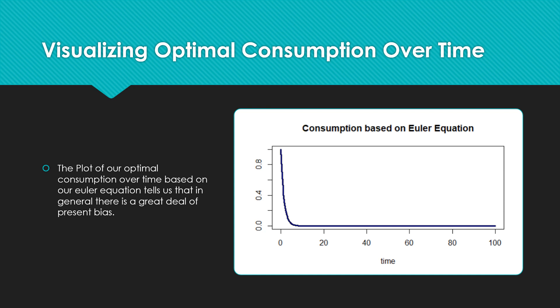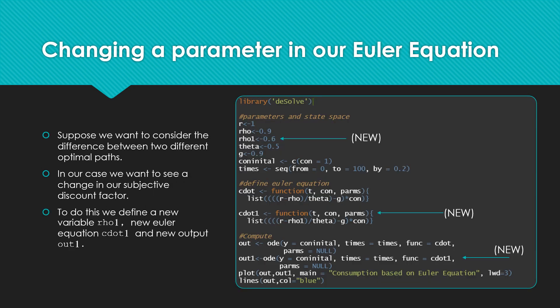Now the visual of our optimal consumption over time tells us the following. First, it tells us that there's a great deal of present bias in our model that we specified through this Euler equation. As such, we see a lot of consumption happening in the beginning of time and not so much happening at the end. There's going to be very, very little as we'll see.